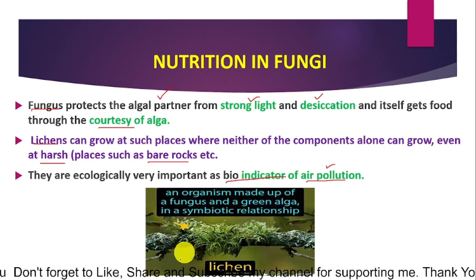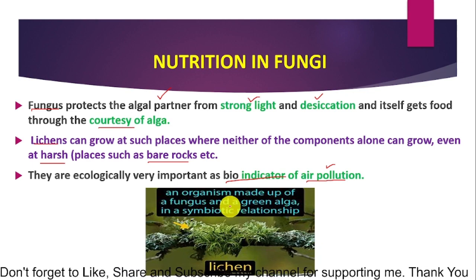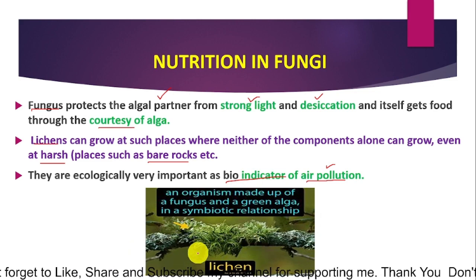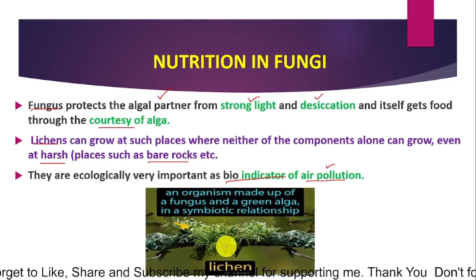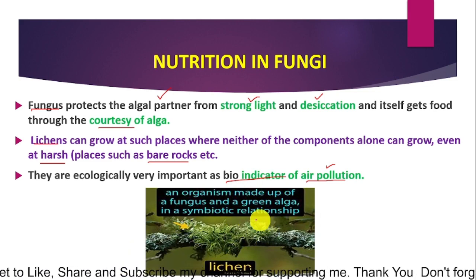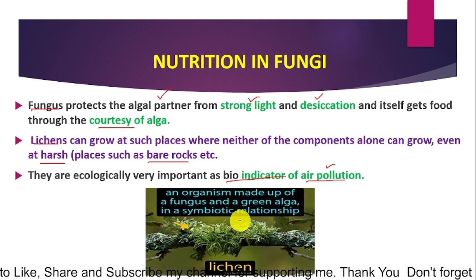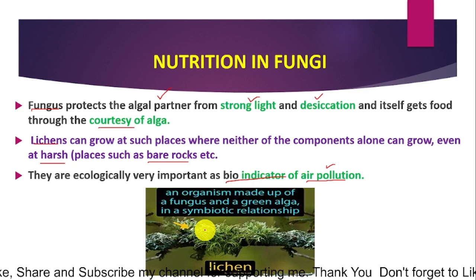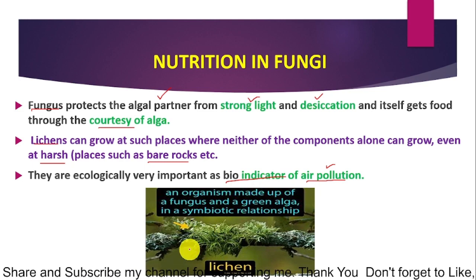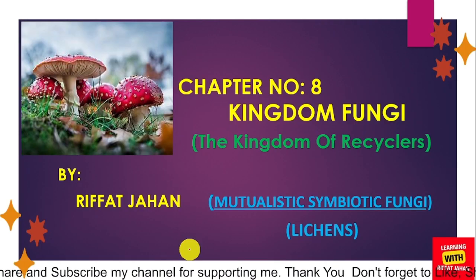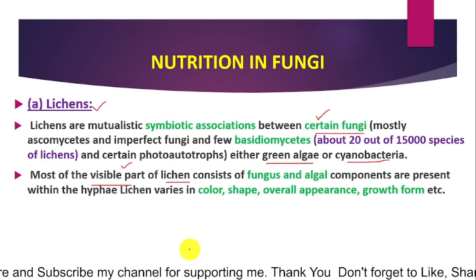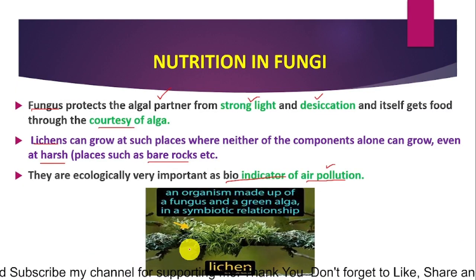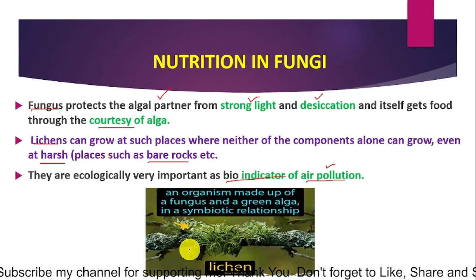I showed you a diagram so that you will be clear. Lichens are made of fungus and green algae — two different organisms joined in a symbiotic relationship. We have discussed lichens in detail today. If you have any questions related to this topic, you can ask in the comments section. Stay connected, Allah Hafiz. Inshallah, next time we will discuss mycorrhizae.